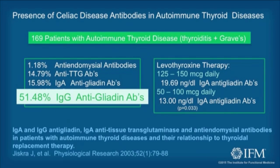A pretty high number — 15% of them have anti-TTG, which is tissue transglutaminase antibodies. About 15% have IgA anti-gliadin antibodies. But look at this: 51% of these patients with autoimmune thyroid disease had IgG anti-gliadin antibodies.